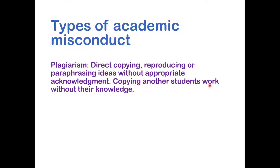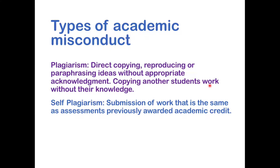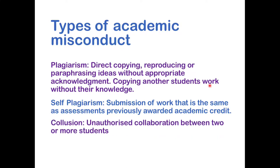Something else the university looks for is self-plagiarism — this is something you need to be careful of. If you submit work that is the same as a previous assessment that was awarded academic credit, that counts as self-plagiarism. So you can't submit an essay in your second year that's mostly based on work you wrote in your first year, and you can't submit the same piece of work twice in resits. Collusion is unauthorised collaboration between two or more students — for example, writing an individual assignment as a pair when you're not supposed to.